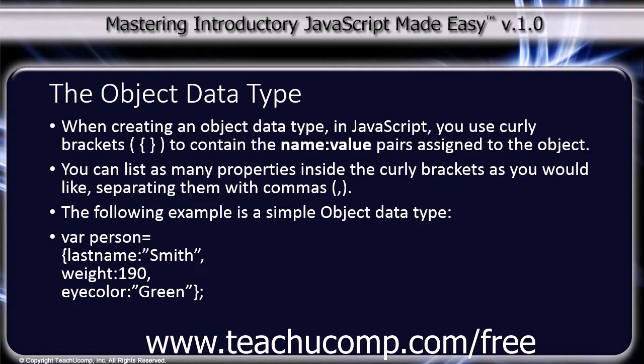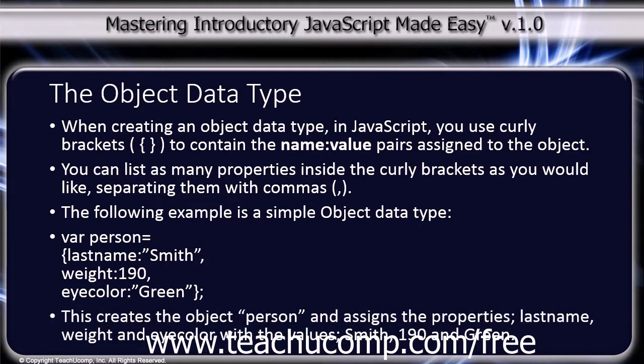So this example creates the object person and assigns the properties of last name, weight, and eye color, where each property has the value of Smith, 190, and green.